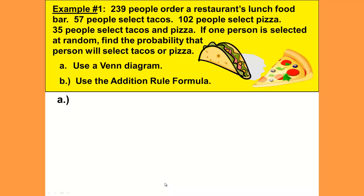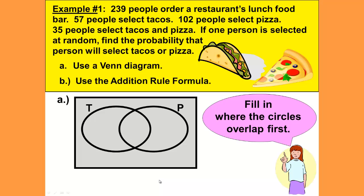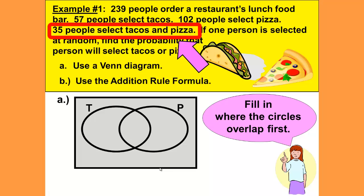Let's solve this using the Venn diagram. The first step is to draw your box and your two circles — T for tacos, P for pizza. Remember we fill in the circles where they overlap first. That is always the first step in using a Venn diagram. The overlap is the intersection, the AND part. So we're looking for tacos AND pizza — that's 35 people. We'll put that 35 in the center where the overlap is.